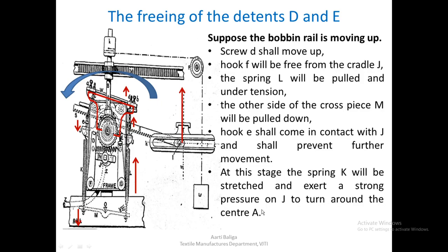Spring K will come under tension, be stretched, and exert a strong pressure on cradle J. At the same time, as this is pulled downwards, E will exert a strong pressure on J and want it to turn. It will tend to rotate or oscillate cradle J around center A.